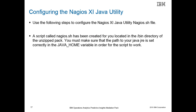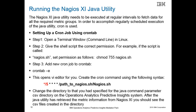We will now discuss how to run the Java utility. A script called nagios.sh has been created that executes the Java utility. This script is located in the bin directory of the unzipped pack contents. You must make sure that the path to the Java JRE is set correctly in the java_home variable defined in the nagios.sh script. The nagios.sh shell script needs to be executed at regular intervals to fetch data for all the required metric groups. To accomplish regularly scheduled execution, cron is used. The steps to schedule the cron job are shown in this slide; note that the value 5 indicates the cron job will run every 5 minutes. You must make sure the correct path to execute the nagios.sh file is set. After the scheduled shell script has been executed, you can check if any CSV files have been created in the directory specified for the java command csv path parameter.